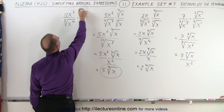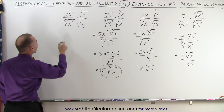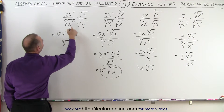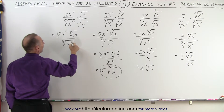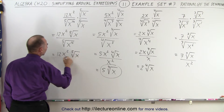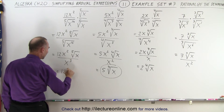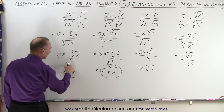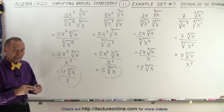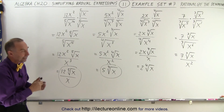Here we do the same thing — we're going to multiply both the top and the bottom by the fifth root of x to the first power, because now when we multiply the denominator we will get x to the 15th inside the radical. So this becomes 12x squared times the fifth root of x divided by the fifth root of x to the 14 times x to the first, which is x to the 15th. 15 divided by 5 is 3, so in the denominator we get x cubed. Now we can simplify: x squared divided by x cubed gives x to the first power in the denominator, so the final simplified form is 12 times the fifth root of x divided by x. It's all about getting the power in the radical to be a multiple of the root, and that is how it's done.